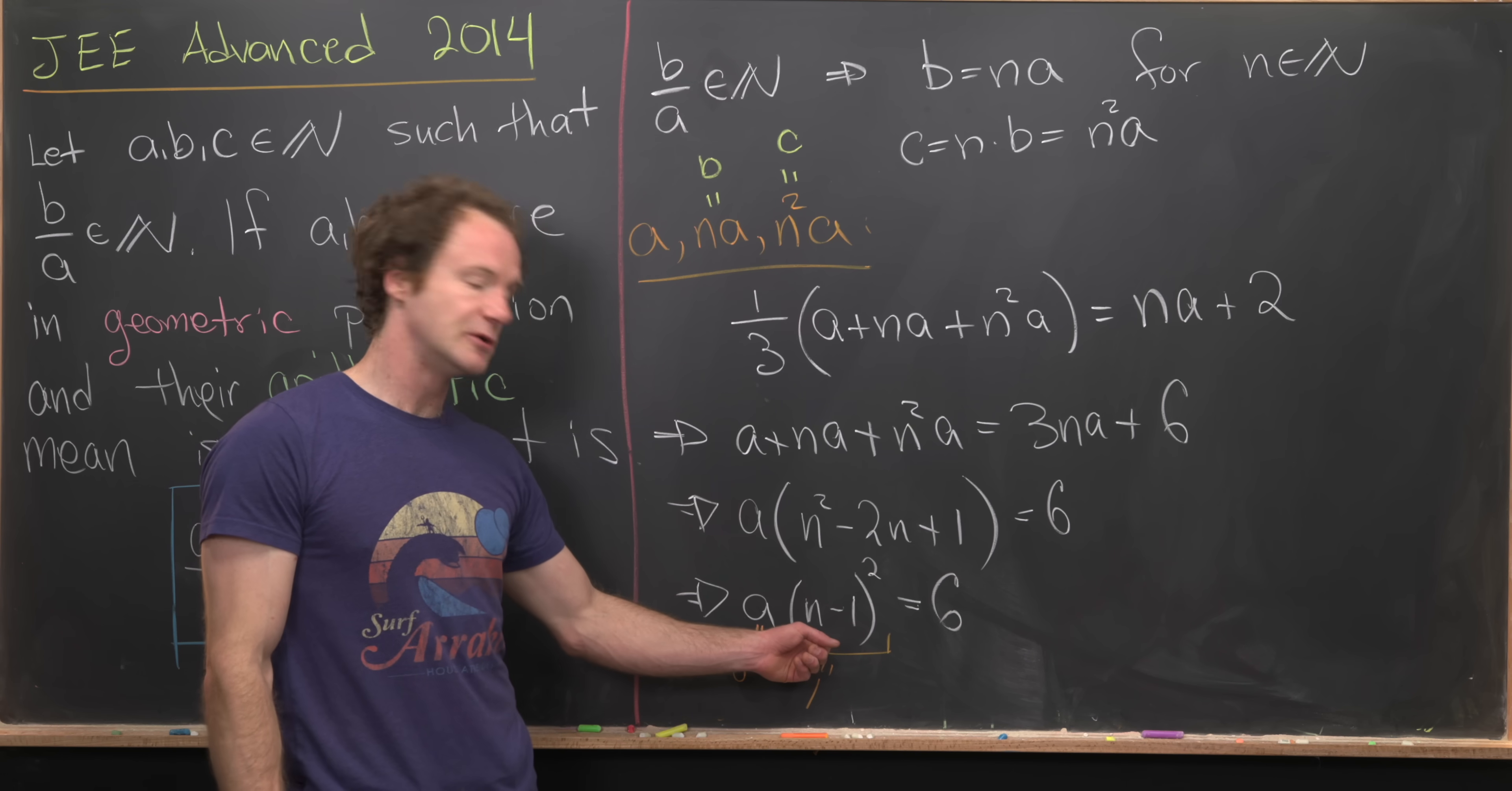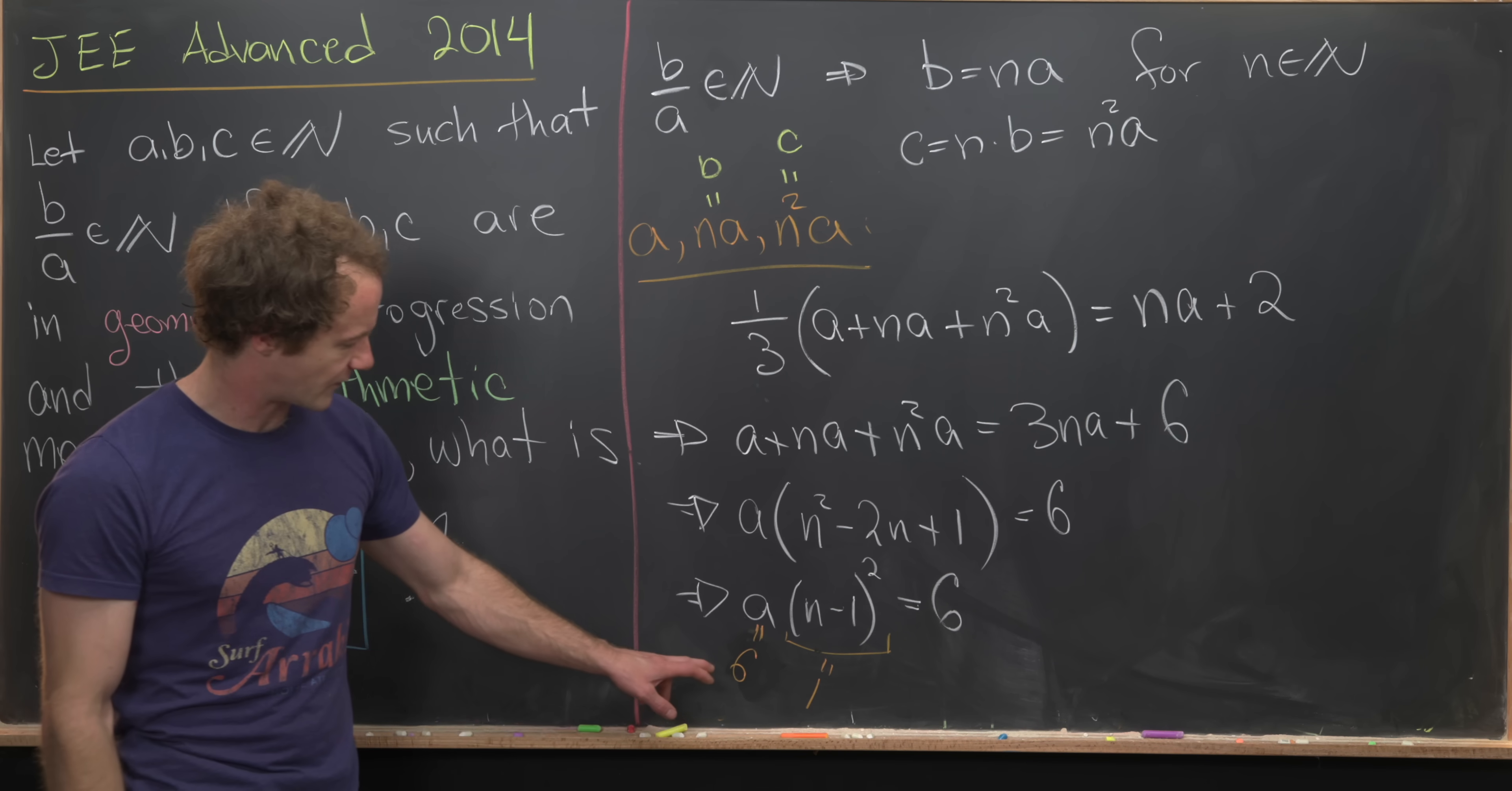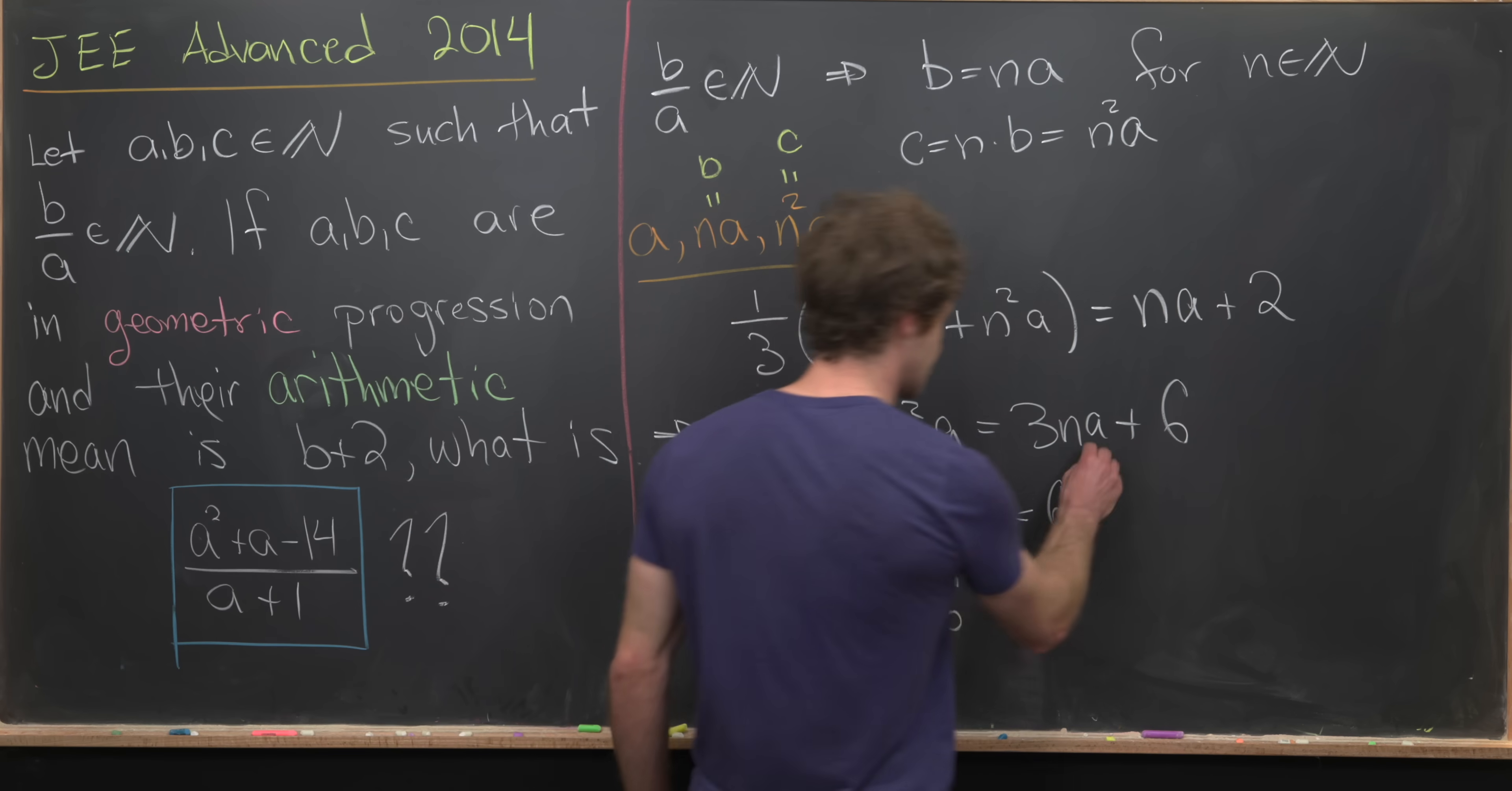Notice all other factorizations of 6 will give us something that is not a perfect square. Like we could factor it like 3 times 2, but there is no square integer that becomes 2 and then so on and so forth for 2 times 3 and 1 times 6. So this tells us that A is equal to 6.